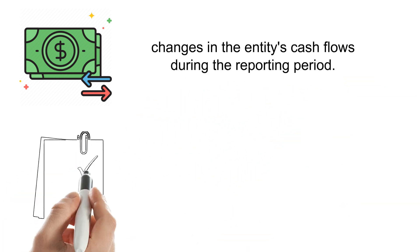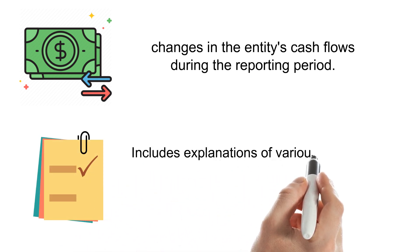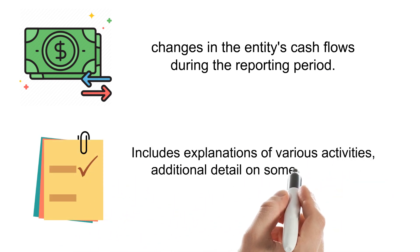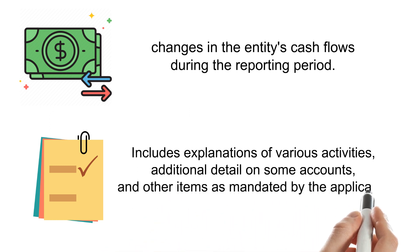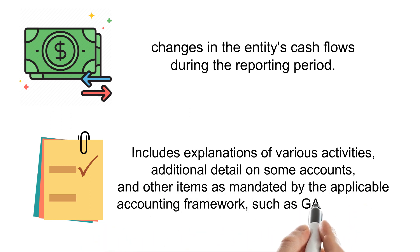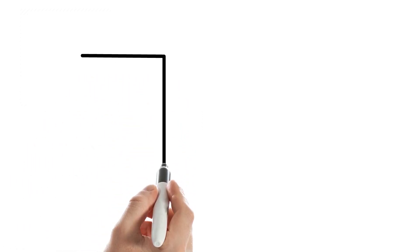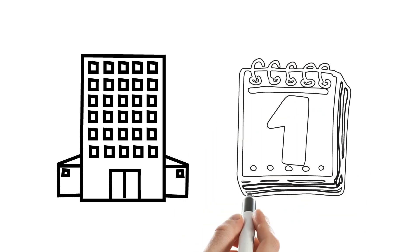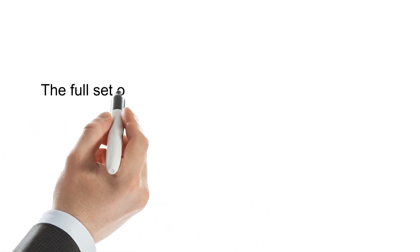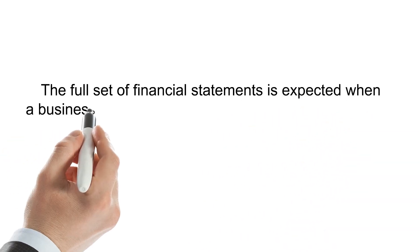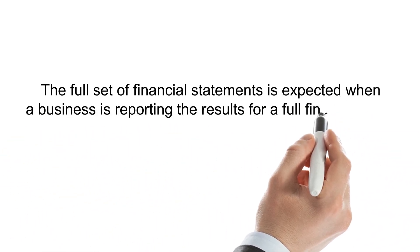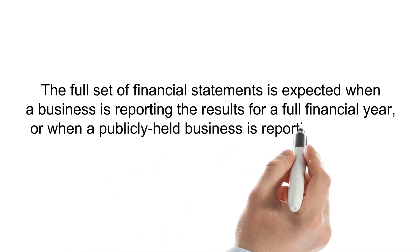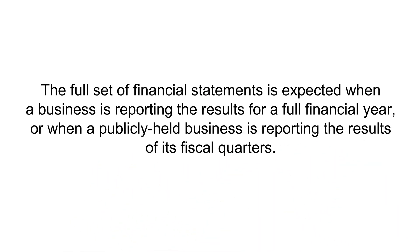Lastly, supplementary notes include explanations of various activities, additional details on some accounts, and other items as mandated by the applicable accounting framework, such as GAAP or IFRS. At a minimum, a business is expected to issue an income statement and balance sheet to document its monthly results and ending financial condition. The full set of financial statements is expected when a business is reporting results for a full financial year or when a publicly held business is reporting the results of its fiscal quarters.